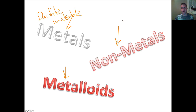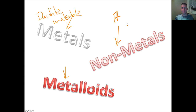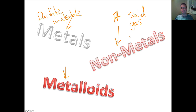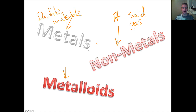When we look at non-metals, there are only 17 non-metals in the periodic table. Their properties are opposite the metals, but they are either going to be solid or gas at room temperature. They're not malleable. They're not ductile. They have low boiling points and low melting points.